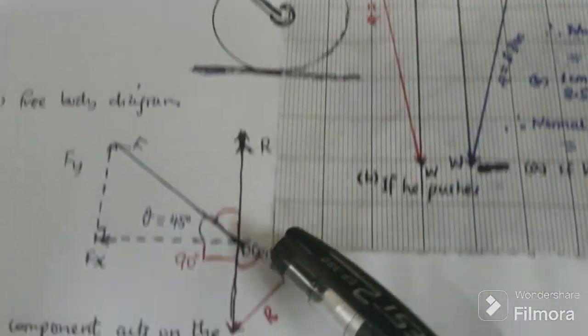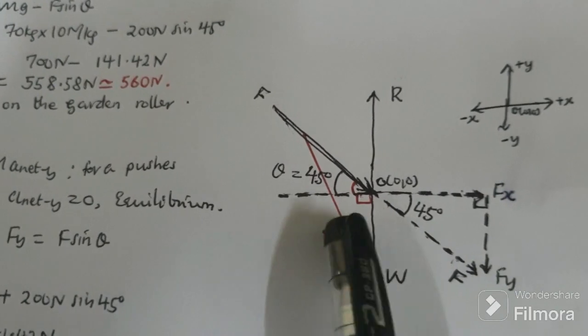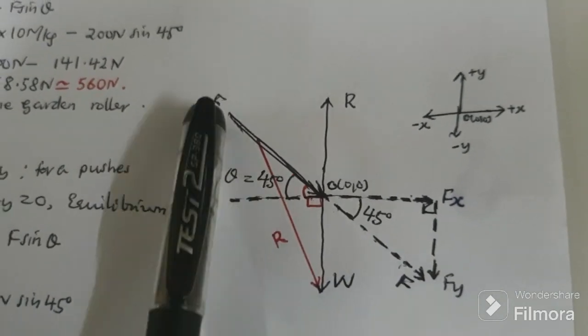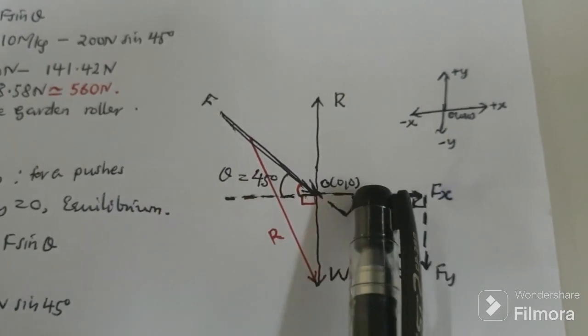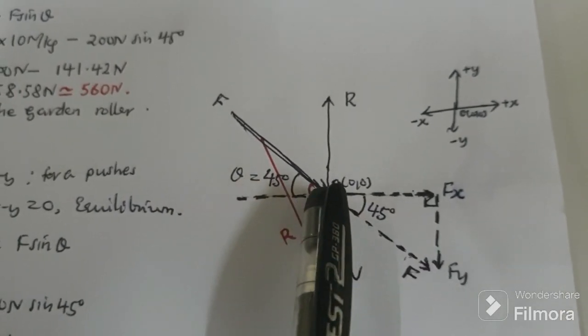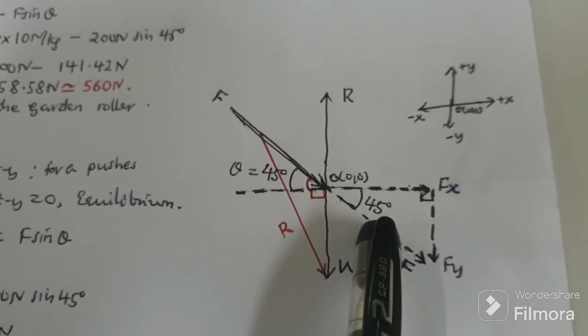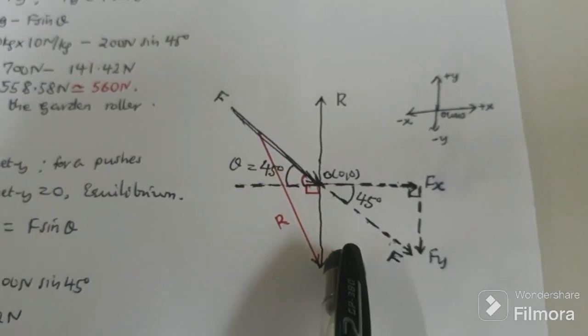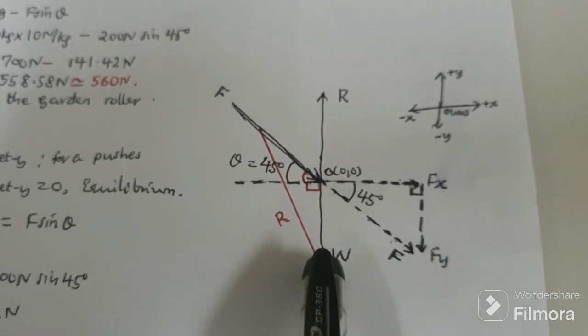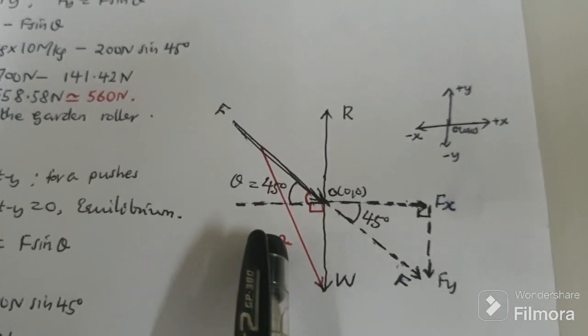If he pushes the garden roller, the diagram now will be as I can see below. The force is acting downwards at angle 45 degrees with horizontal. Now we take this force at this point where the weight W is acting. Another vector is acting downwards, which is weight of the garden roller. As usual, 45 degrees, 90 degrees separating the two vectors.